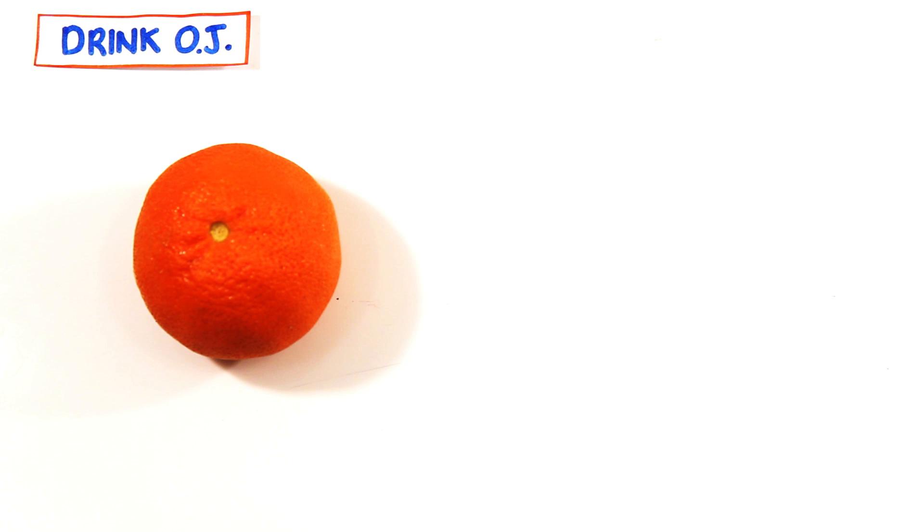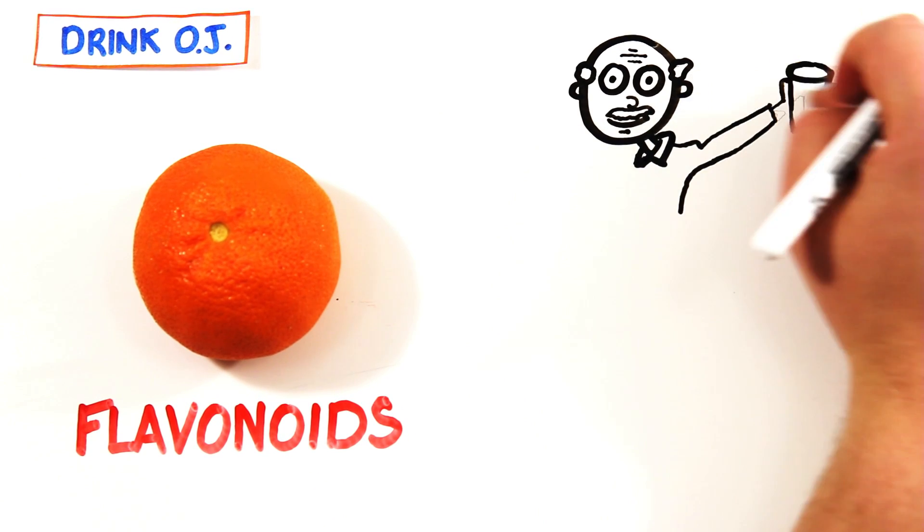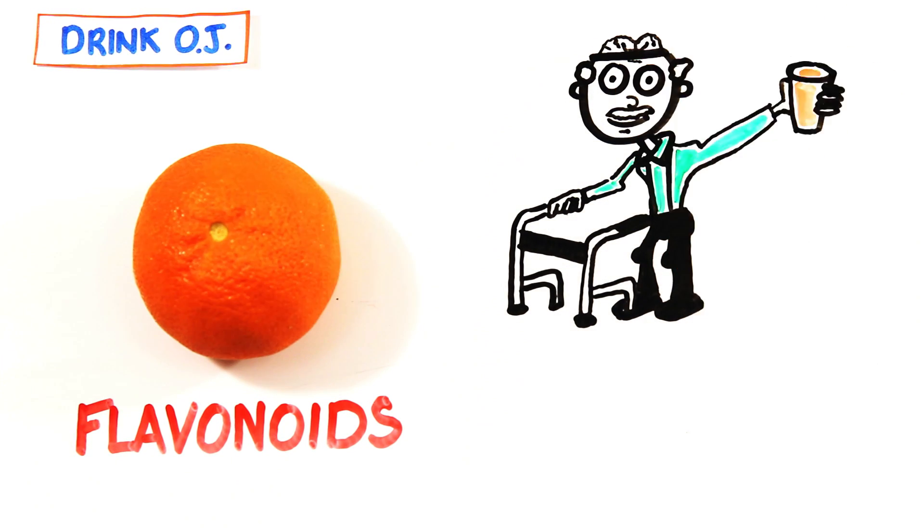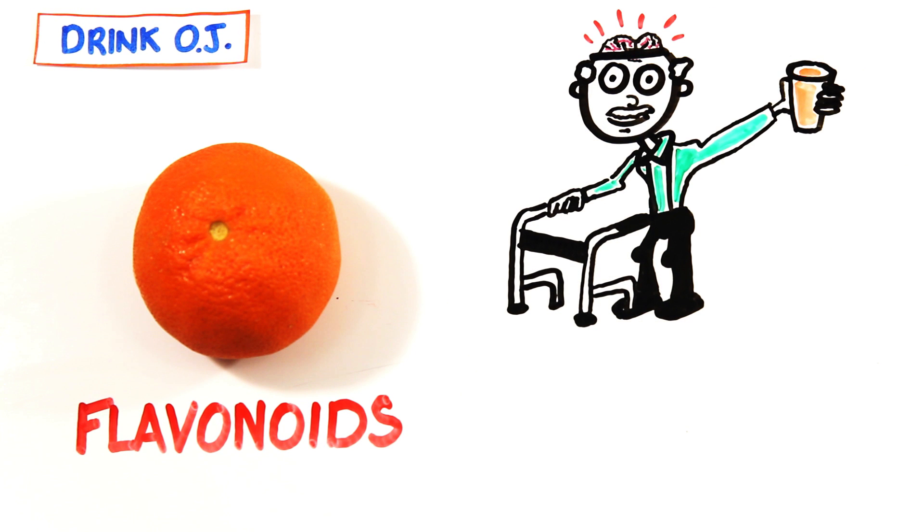Five, drink some orange juice. Citrus fruits like oranges are rich in molecules called flavonoids. Flavonoids have been linked to slowing cognitive decline due to aging and decreasing the onset of neurodegenerative diseases like Alzheimer's.